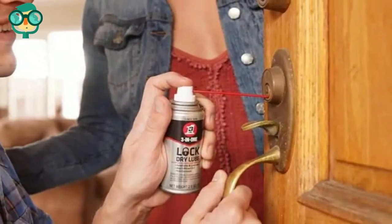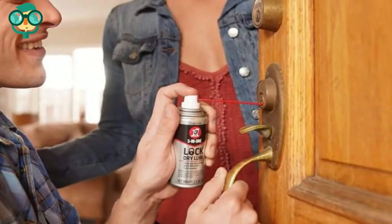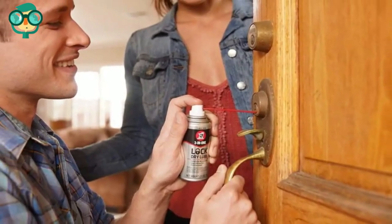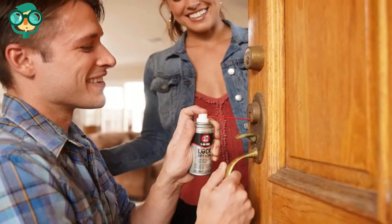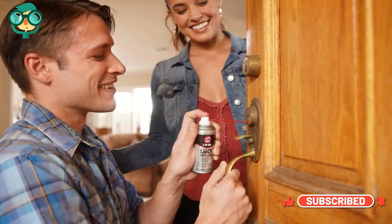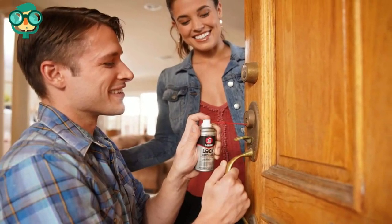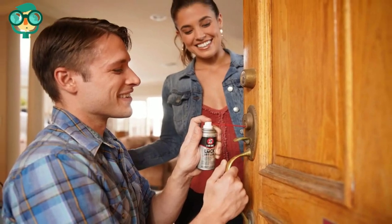Lube the lock with a dry lubricant. In order to avoid the accumulation of dust inside the lock, you want to use a dry lubricant. Spray a dry lock lubricant, such as 3-in-1 lock dry lube, into the keyhole. Insert your key and move it around to spread the lube into the lock.